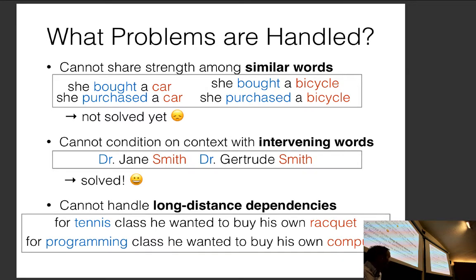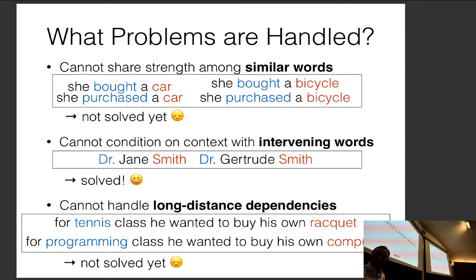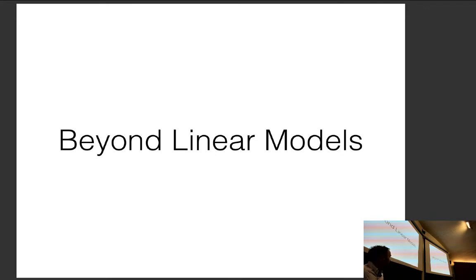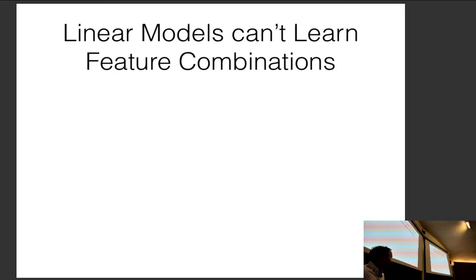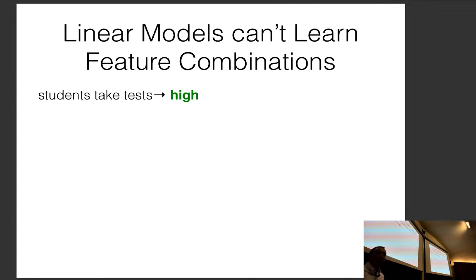The log-linear model can solve the problem of conditioning on context with intervening words: the feature for what was two words ago being 'doctor' would upweight the probability of 'Smith.' However, it still can't handle long-distance dependencies. To fix this we can move beyond linear models. As with the CBoW model, linear models can't handle feature combinations — for example, 'students take tests' vs. 'teachers write tests' — which is essentially an XOR problem.